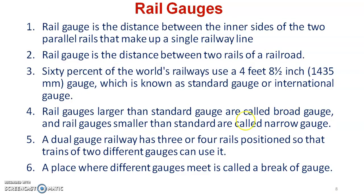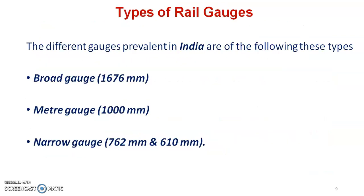Gauge is the distance between the inner side of two parallel rails. If the gauge length is large, we call it broad gauge. If it is medium, we call it meter gauge. If it is very small, we call it narrow gauge. When two different gauges meet at a point, we call it a break of gauge. There are three types of gauges: broad gauge, meter gauge, and narrow gauge. Broad gauge is 1676 mm. Meter gauge is 1 meter or 1000 mm. For narrow gauge, the distance between the two rails is 762 mm or 610 mm.